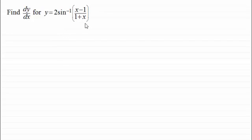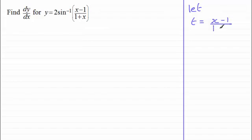So to do something like this, this is a typical example where you need to use the chain rule and I would want to let t equal x minus 1 all over 1 plus x. So if I was to just draw a line down here, let's say then we let t equal x minus 1 all divided by 1 plus x.